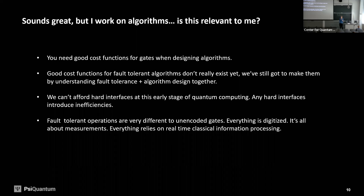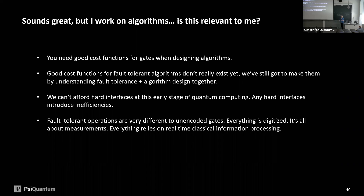The same is true for fault tolerance: you can get your ideal qubits but you pay a big price, and we can really accelerate making machines useful if we have looser interfaces. Furthermore, fault tolerant operations are fundamentally different from NISQ operations — you're not doing unitary operations at all, you're doing projective measurements. That physics is very different and can be exploited, though there's a lot more to understand about how it changes things for algorithms.